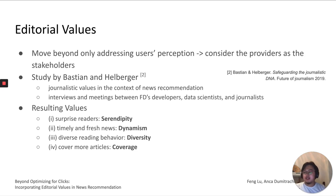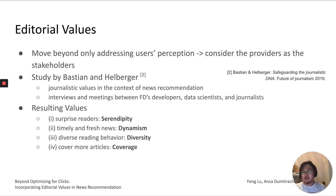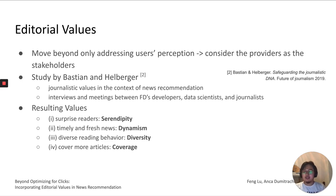This covers the system and feature design from the data scientist's perspective. Since we are in a news organization with a clear responsibility towards society and our own editorial values, we don't want to just build our system to be as accurate as possible — we also want to consider providers as stakeholders. We want to study whether a news organization's journalistic values can be considered important in the context of algorithmic personalization. Our organization participated in a study by Bastia and Helberg in which journalistic values important for news recommendation were identified, and we followed this up with our own interviews and meetings between FD's developers, data scientists, and journalists.